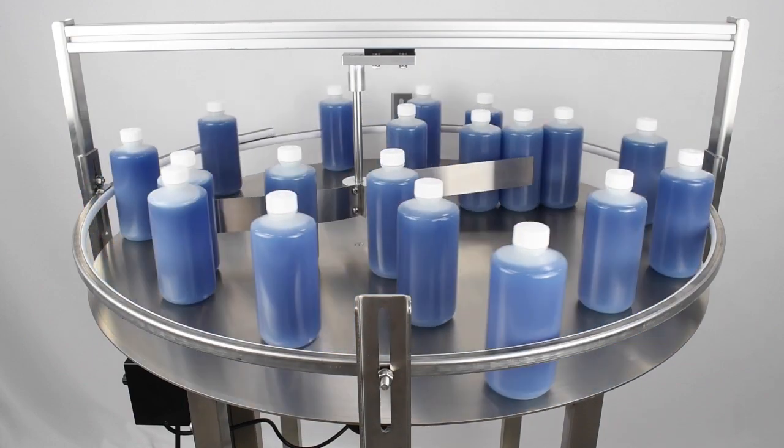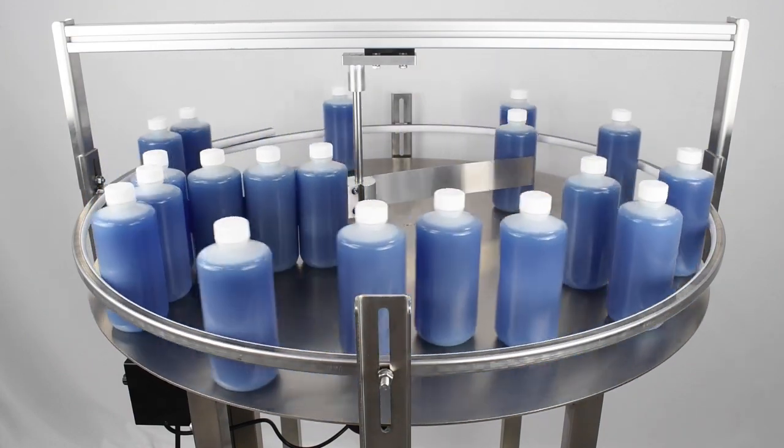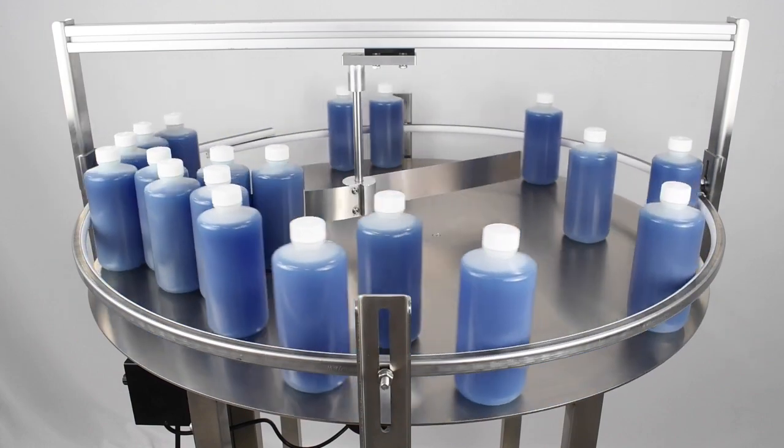You can now add your containers to the accumulation table and turn it on. If your containers are falling over, you may need to adjust the height of the unscrambler.